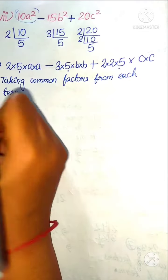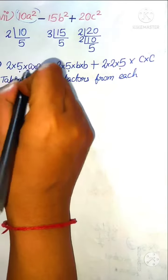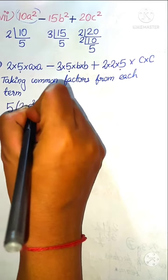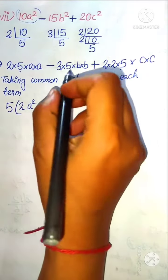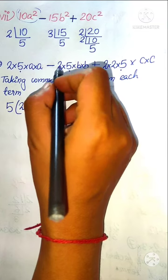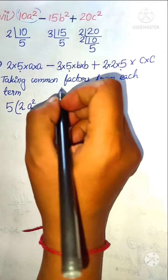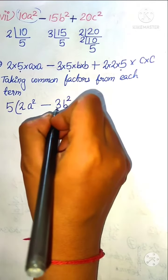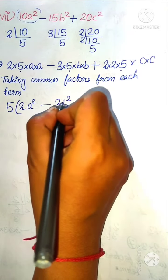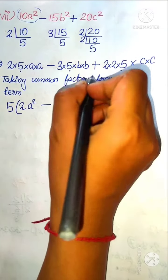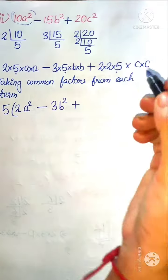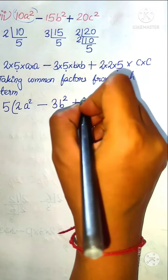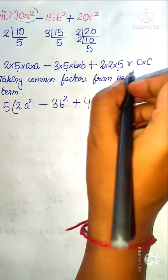If we take 5 as the common factor, in the first term we are left with 2 and a into a, that is 2a square. The separator is minus, so we write minus. From the second term, after taking out 5, we are left with 3b square. Then separator plus. From the third term, we are left with 2 into 2, that is 4, and c into c, that is c square. So our final answer is 5(2a square minus 3b square plus 4c square).